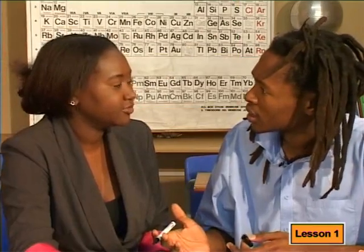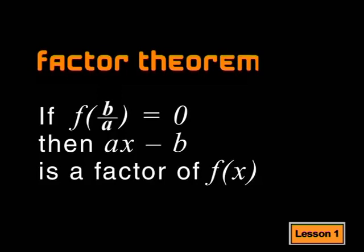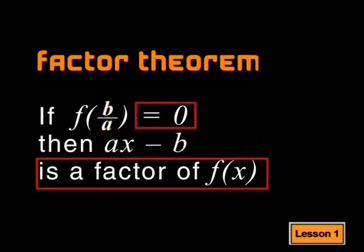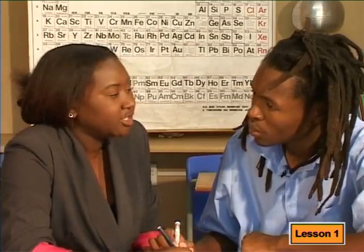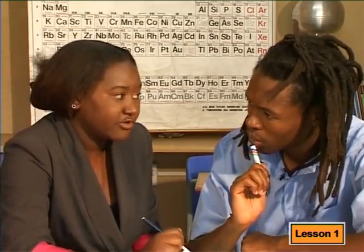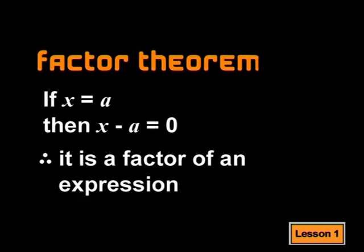So where do we start? We start by looking at what we call the Factor Theorem. The Factor Theorem says that if f of b divided by a equals 0, then ax minus b is a factor of f of x. Simply put, if we substitute the x value of the divisor into the function and the remainder is 0, then the divisor must be a factor of the function. In order to factorize a cubic expression, we first need to look for a common factor. If there is no obvious common factor, then we use the Factor Theorem to find a factor. We substitute by trial and error different values for x until we find one that makes the expression equal to 0. So if the x value equals a, then x minus a is the factor.